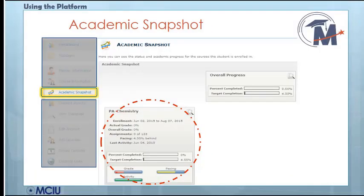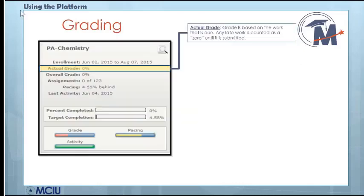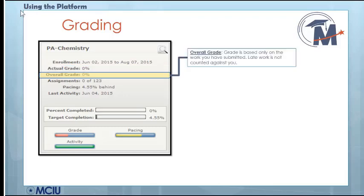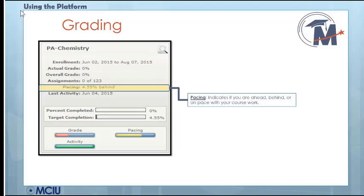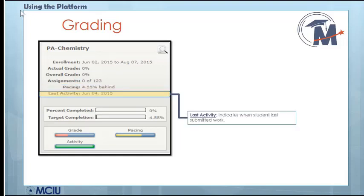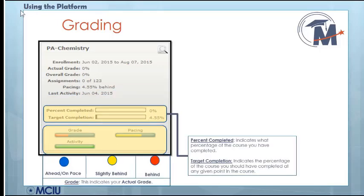Let's take a closer look at the Academic Snapshots screen. On this screen, you will see more detailed information for each course you are taking. Using a Chemistry course as an example: the Actual Grade is based on work that is due and takes late work into consideration — late work is counted as zero and would lower your grade. The Overall Grade is based only on the work that you have submitted and does not take late work into account. Assignments shows how many assignments there are in the course and how many you have submitted. Pacing indicates if you are ahead or behind of where you should be. Last Activity shows the last time that you submitted an assignment. Percent Completed shows what percentage of the course you have completed. Targeted Completion shows where you should be at any given point in the course.